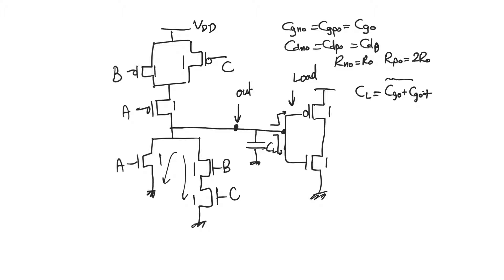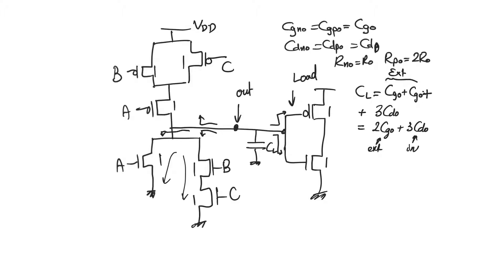There is also self-loading from the current stage. At the output node we see three transistors: two nMOS transistors A and B, and a single pMOS transistor A. Therefore, the self-loading is 3cd — two from the pull-down network and one from the pull-up network. So the total loading capacitance is 2cg + 3cd, where the gate component is external loading and the drain component is intrinsic or self-loading.